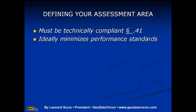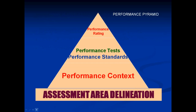This is because CRA performance standards are driven by what the regulation calls performance context. Performance context includes your bank's size and resources, community demographics, and local credit markets. Every time you add or omit census tracts from your assessment area, you are affecting performance context and thereby changing performance standards. The relationship between how you construct your assessment area, performance context, and performance standards leading to your performance rating is best demonstrated by what we call the CRA performance pyramid.